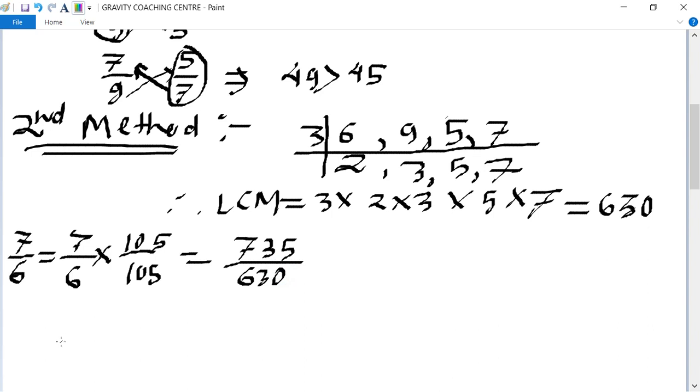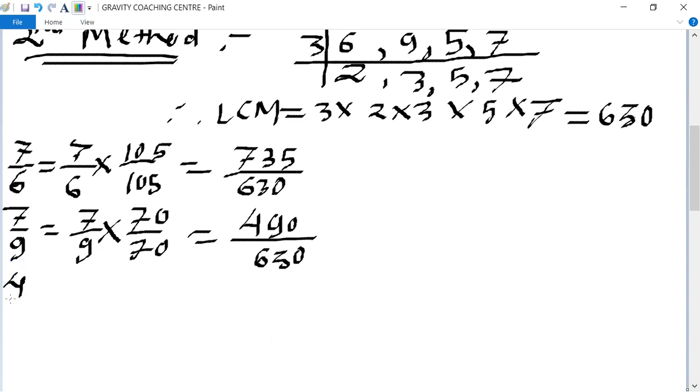The second fraction is 7 upon 9 equal to 7 upon 9 multiply, 630 divided by 9 is 70, equal to 490 upon 630. The next fraction is 4 upon 5 equal to 4 upon 5 multiply 126, equal to 504 upon 630.